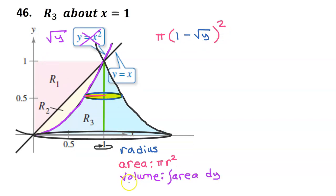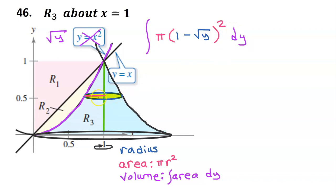The last step is to write an expression for volume by integrating the area. Since we already have an expression for the area, all we have to do is integrate. When you integrate the area of a disk, you are adding up all of the disks to form the volume. Since the disks are stacked up vertically, we are integrating with respect to y. And because the disks are stacked between 0 and 1, these are the limits of integration. Now let's evaluate this integral on the graphing calculator.